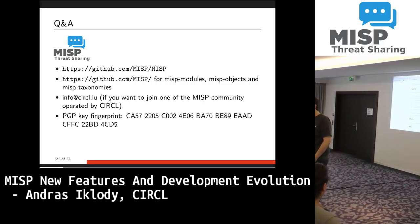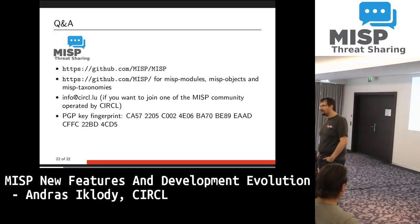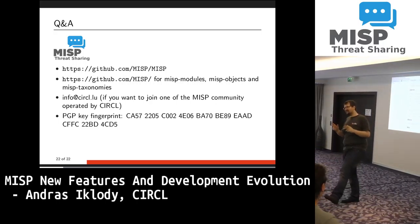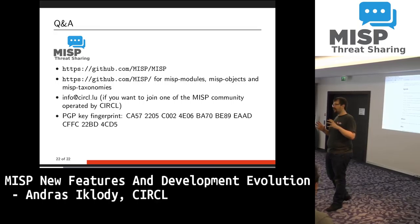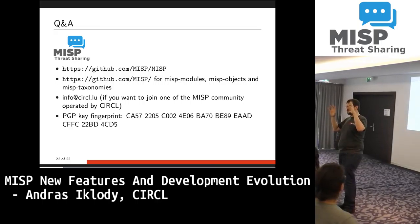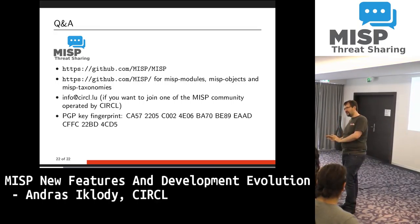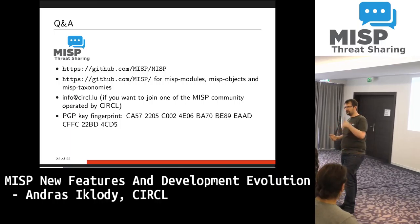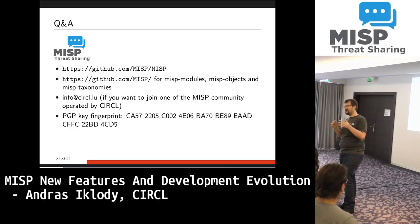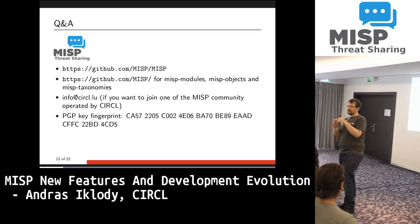Regarding the difference between Galaxies and Objects: Galaxies are structures that have nothing to do with indicators — they're threat actors, tools used by threat actors, and so on. They're threat intel data connected to the event. Objects, on the other hand, are about linking attributes within an event together. If you have 100 attributes in an event, some subsets of those belong together, so Objects link those together.